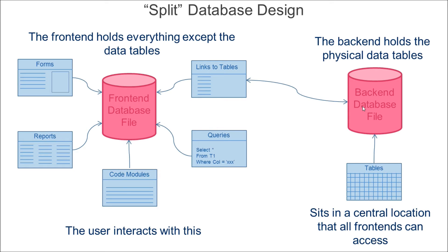One more note on the split database design: this design is a little more complicated in that, for a multi-user environment, the back-end database is going to have to sit in some sort of central location. You'll probably need some sort of file server for it — whether it's an external drive that everybody in the office can access, or a full-fledged network with a network server. The back-end will have to sit in a central location that all the users can reach.